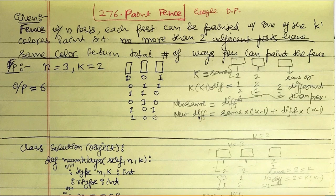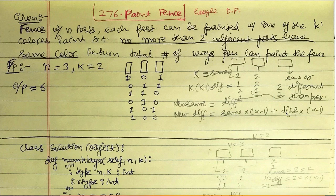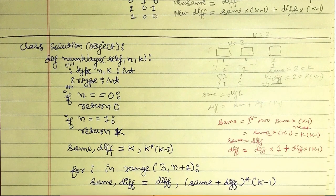Now for the diff variable: if the third pillar has a different color than the second, we can choose any of the k-1 colors for the third pillar. In this case, the first and second pillars can have either the same or different colors, because regardless, the third is different from the second. So we add the same and diff from the previous step and multiply by k-1: new_diff = (same + diff) * (k-1).